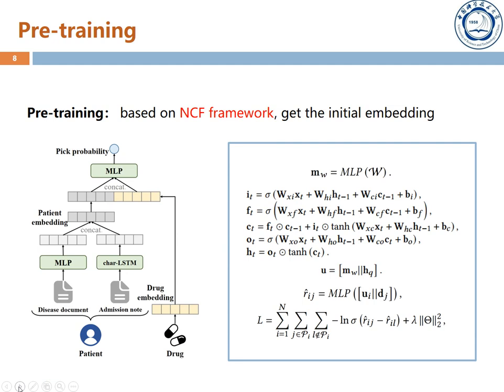A patient's description consists of two heterogeneous parts, and a drug package consists of several drugs. In order to recommend drug packages, we first need to get the embeddings of drugs and patients. We propose to extract the embedding of the patient by MLP and char-LSTM. Then we associate each drug with a randomly initialized embedding. After that, we train the one-on-one interaction by BPR loss and NCF framework. This is our pre-training stage.